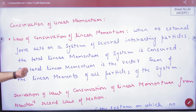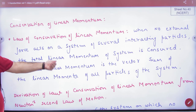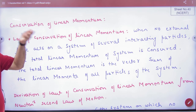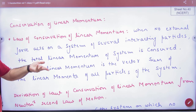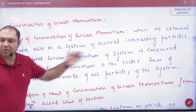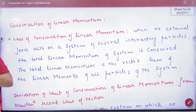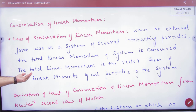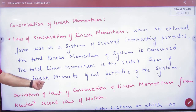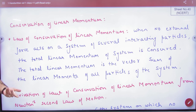The total linear momentum of the system is conserved. If external force is zero, then p is a constant, which we have done last time. Total linear momentum is the vector sum of linear momentum of all the particles of the system.